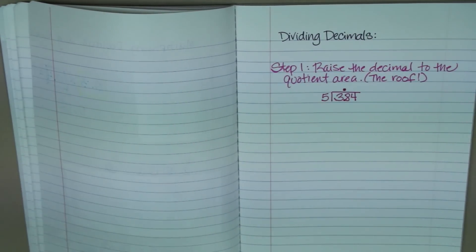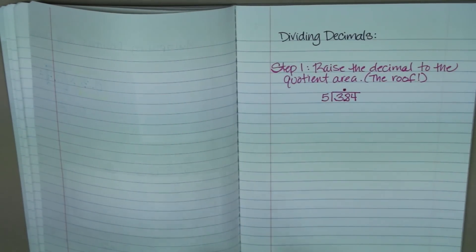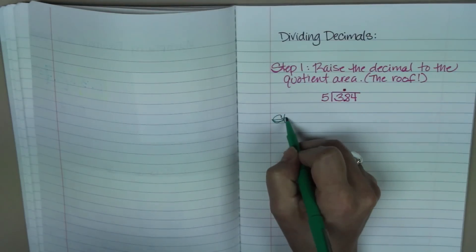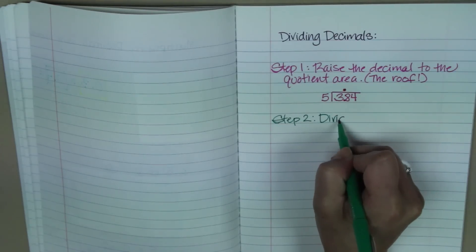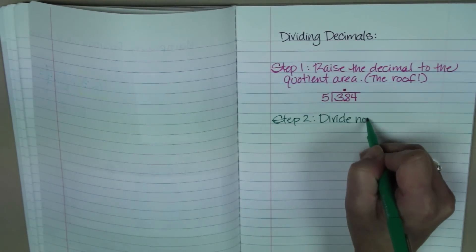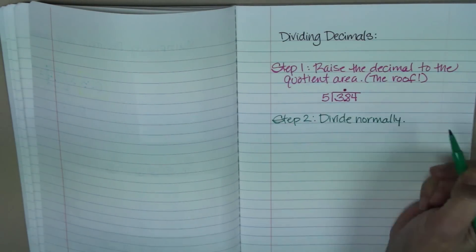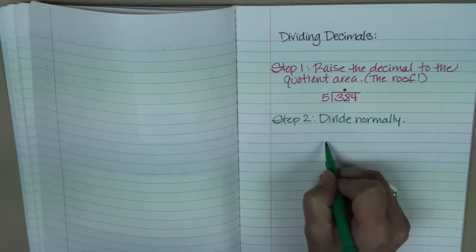Okay, so the second thing that you do is you divide it normally, as if there was no decimal there. So, step two, divide normally. Okay, so I'm going to show you what that looks like.